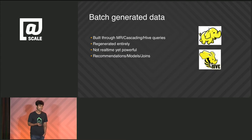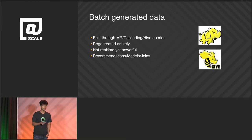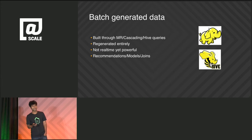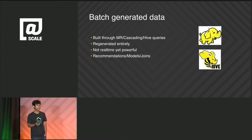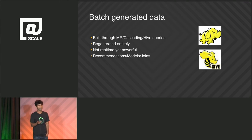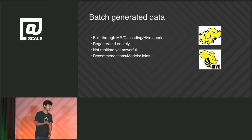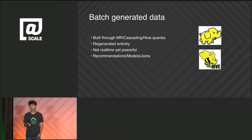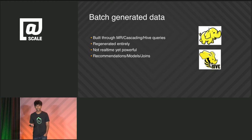So what is batch generated data? It's essentially any dataset that's generated through ETL jobs running on Hadoop clusters — like MapReduce jobs, cascading pipelines, or through Hive queries. It's always regenerated in entirety. For example, a MapReduce job may run today and generate one version of the dataset, and tomorrow it may run again and generate a newer version by running on fresher input. It's not real time, but yet it is very powerful because you can express some very powerful computations through MapReduce jobs.